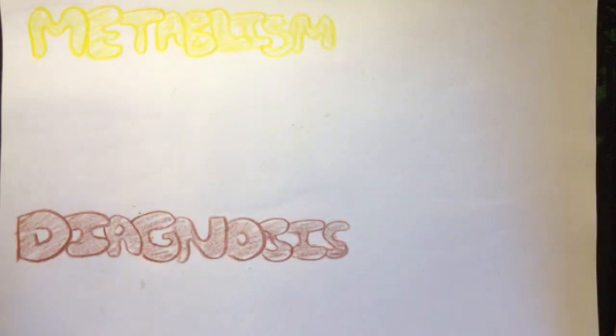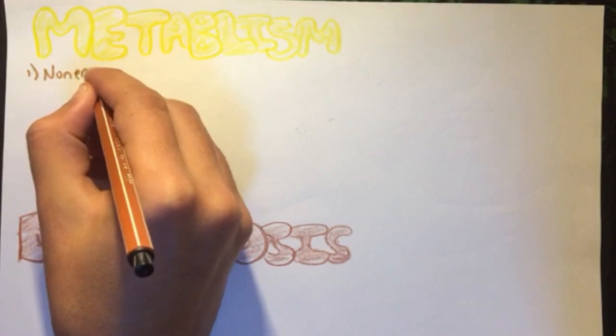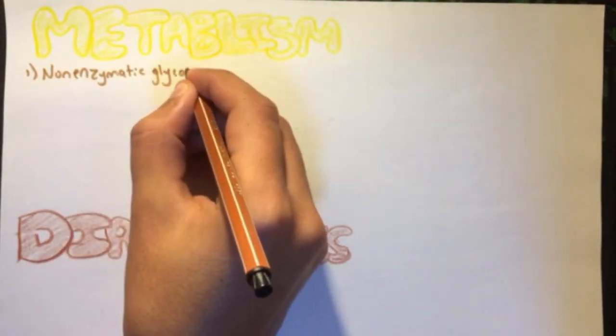Before discussing the complications of diabetes, let's explain why these complications occur. These complications are due to metabolic changes, mostly due to the elevated blood glucose in the blood.